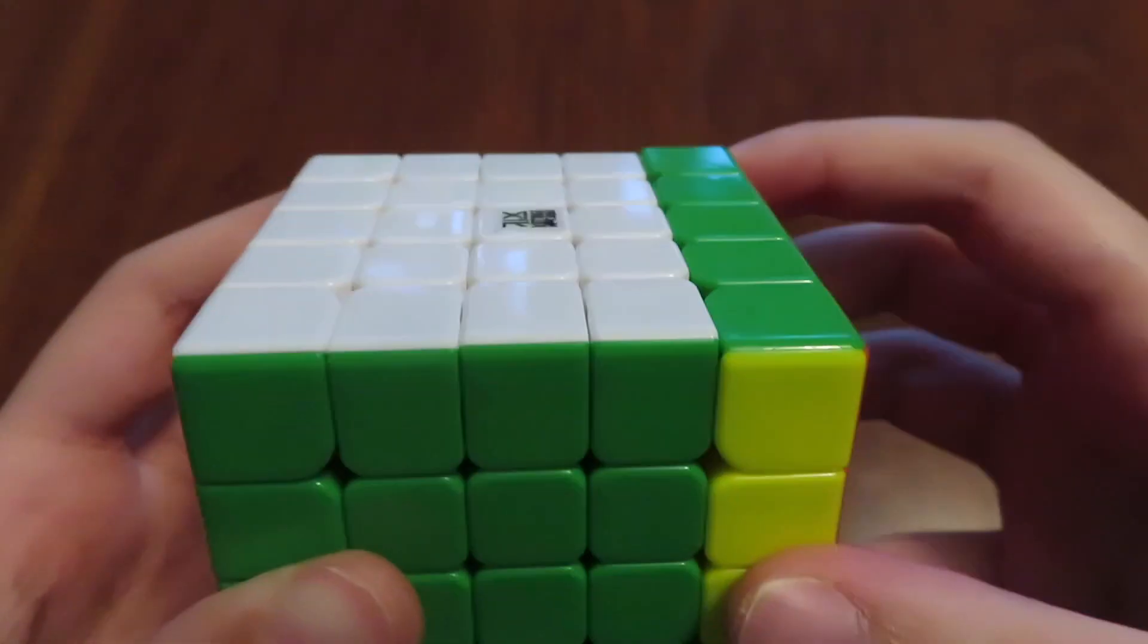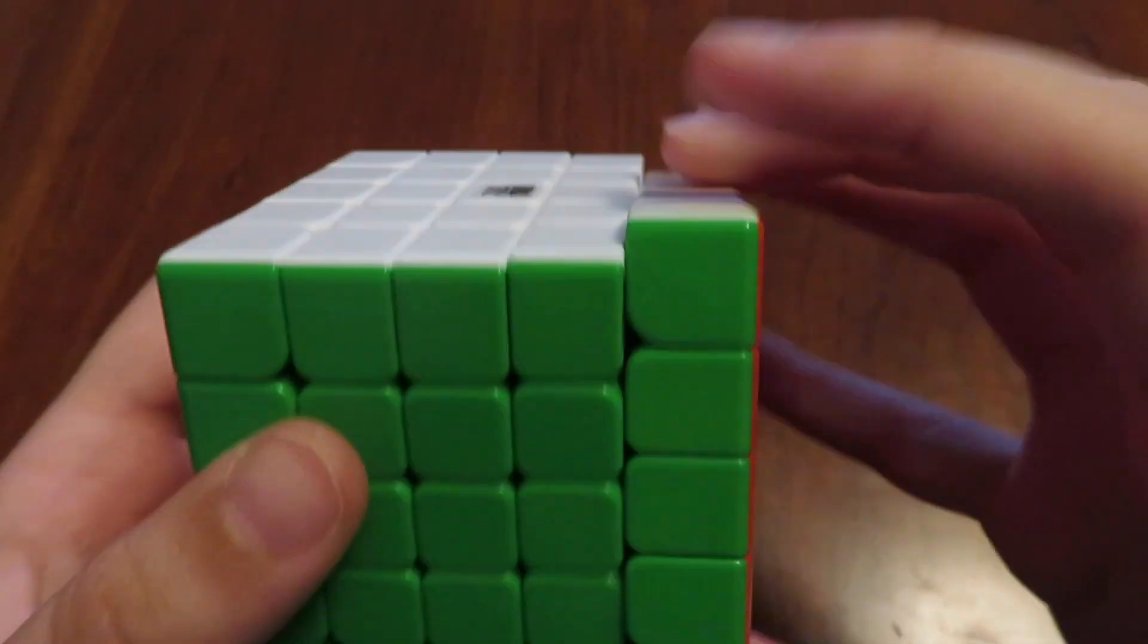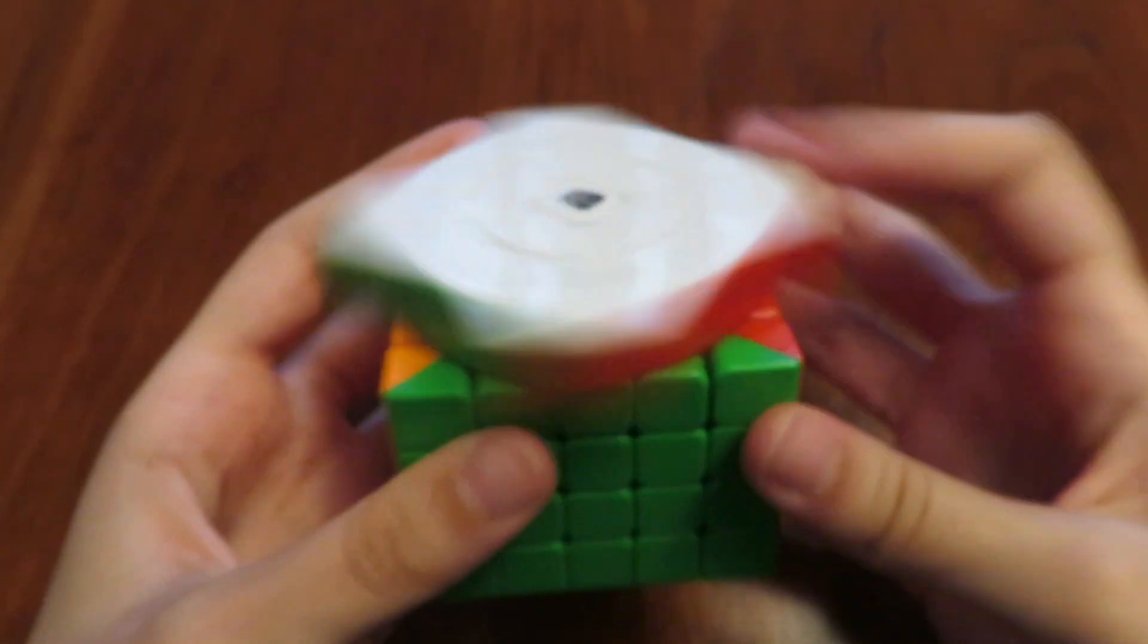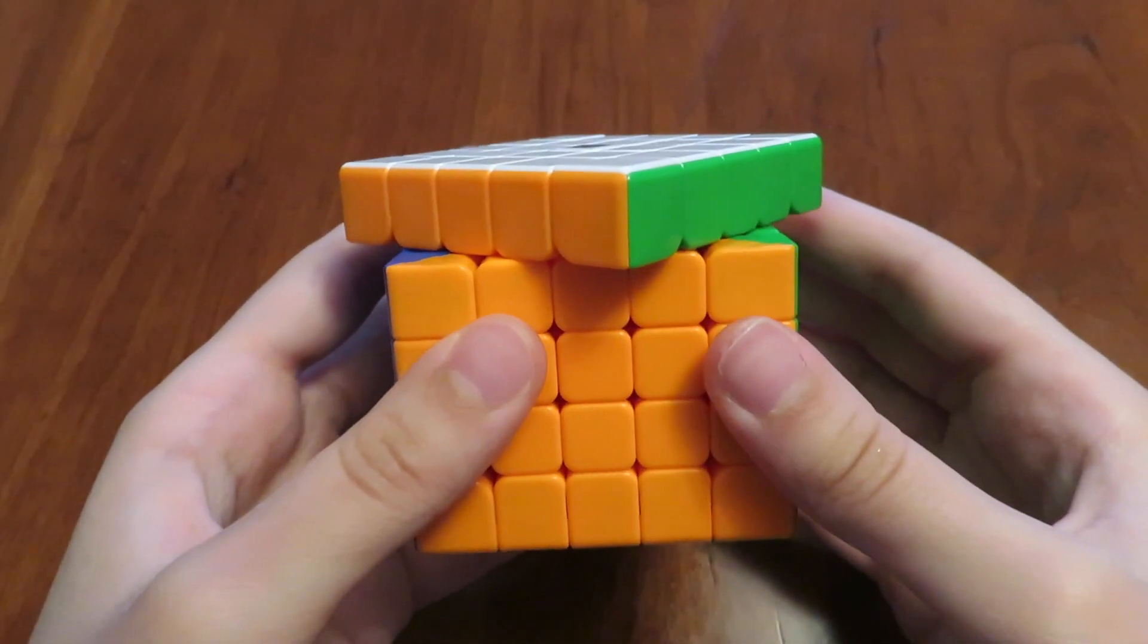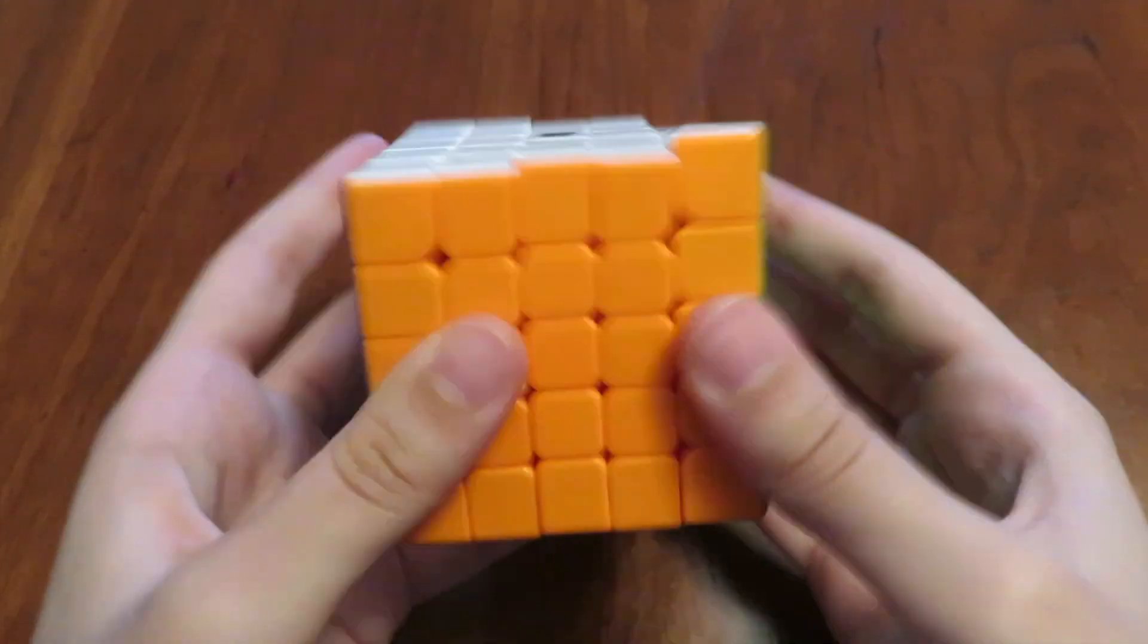To me, the magnets feel slightly weaker than in the GTS-M. I really like the light magnets in the WRM as they allow the turning to remain fast and effortless while still helping with stability and accuracy. Corner cutting on this cube is also exceptional. It can cut nearly 45 degrees effortlessly without any kind of lockup.